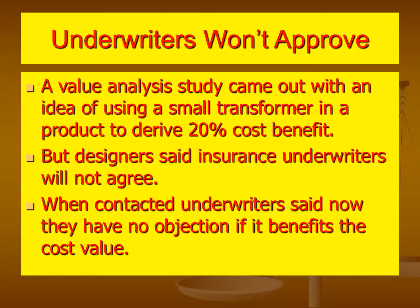In another example, the issue concerns insurance. A value analysis study came up with the idea of using a small transformer in a product to derive a 20% cost benefit. But designers said insurance underwriters will not agree. The value team contacted the underwriters, and the underwriters said they now have no objection to the change if it benefits the cost value. So in this case, the best source is the underwriters and not the designers inside the company, who had knowledge based on an older interaction.